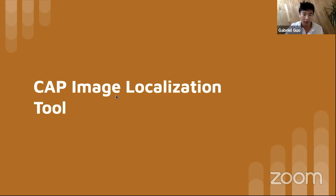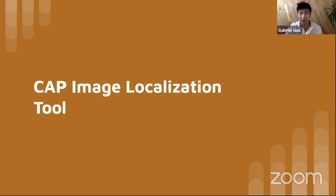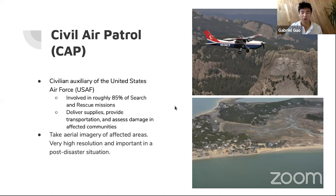Now, the CAP image localization team. CAP stands for the Civil Air Patrol — they do many different things including emergency response. They're involved in roughly 85% of all search and rescue missions in the U.S. and also deliver supplies, provide transportation, and assess damage in affected communities. Part of their job is taking aerial photos of affected areas — this imagery is very high resolution and very important in a post-disaster situation. One of the things we did was visualize where the CAP images are taken and the points of interest in them, such as hospitals and airports.